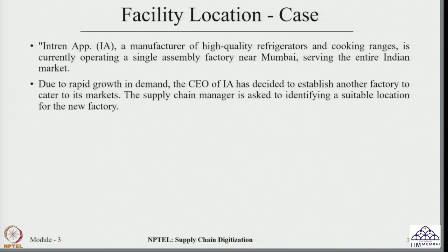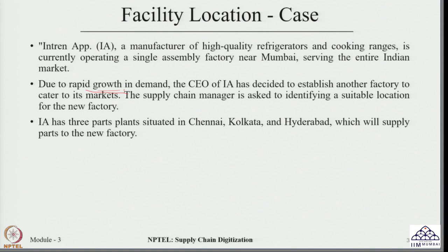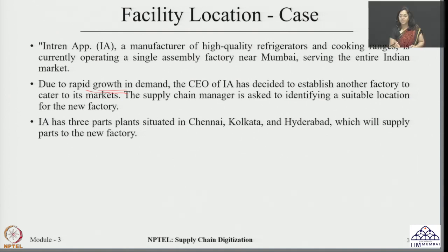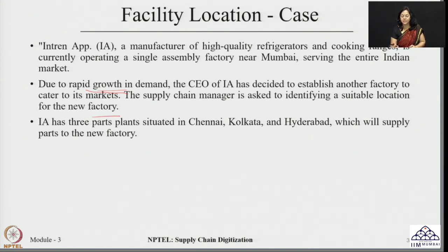This product has gained popularity and because of that, rapid growth in demand has been observed. Because of this increase in demand, the CEO of the company has decided to make another factory so that this increased demand can be catered. In this situation, the supply chain manager is playing a critical role — his job is to find a suitable location for this new factory which can be used for serving this excess demand.